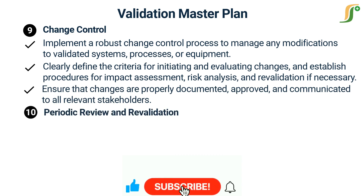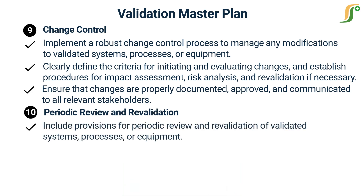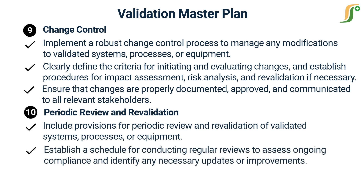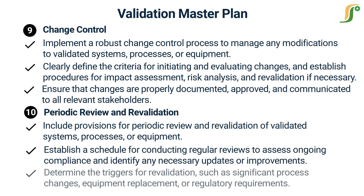The tenth step is periodic review and revalidation. Include provisions for periodic review and revalidation of validated systems, processes, or equipment. Establish a schedule for conducting regular reviews to assess ongoing compliance and identify any necessary updates or improvements. Determine the triggers for revalidation, such as significant process changes, equipment replacement, or regulatory requirements.